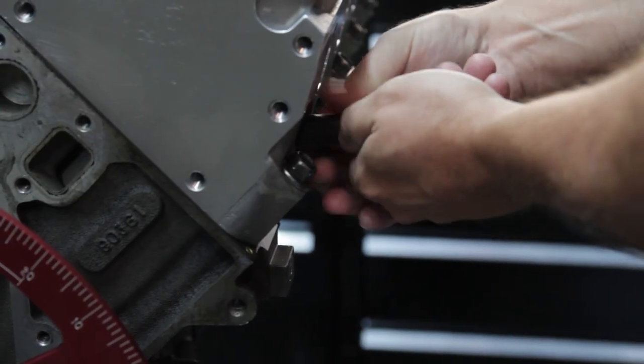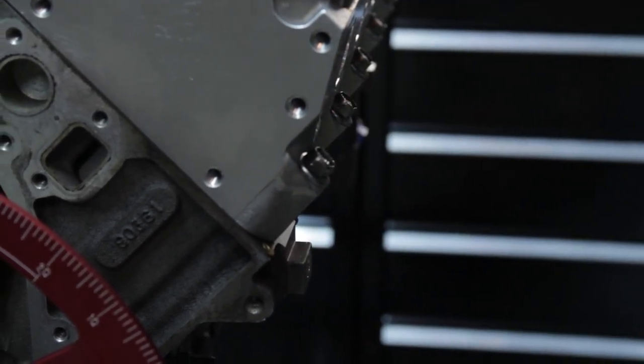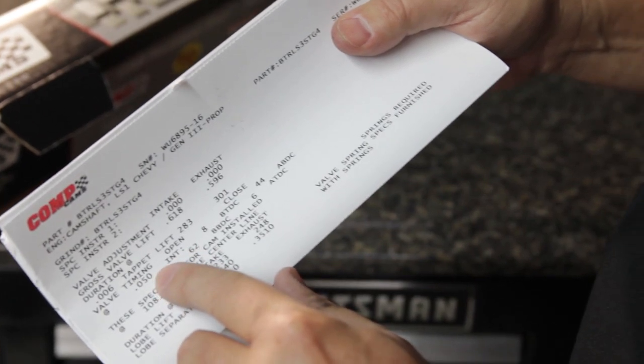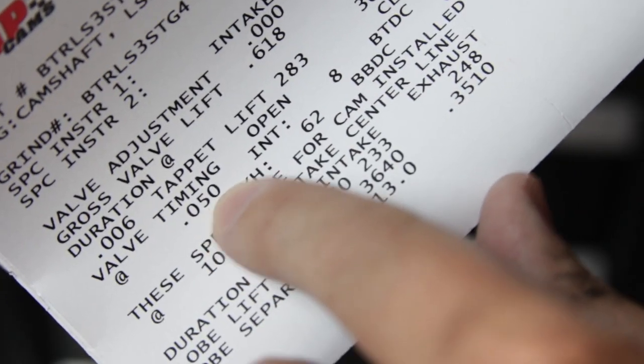Now that we have found top dead center, we can remove the piston stop and find out where our 50 thousandths open point is on the degree wheel. Eight degrees before top dead center at 50 thousandths lift.